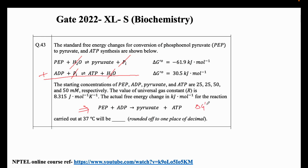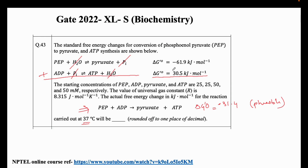What will be the resultant free energy change? We just add the two values: minus 61.9 plus 30.5 gives minus 31.4 kJ/mol. The overall delta G is still negative, which means the reaction is still feasible. It occurs in the cell at 37 degrees Celsius. Because of this high negative delta G, we are able to use it for ATP synthesis.